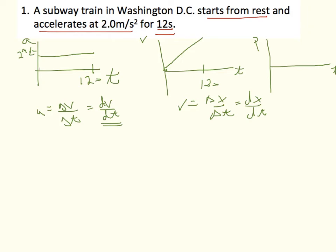Since the velocity is constantly changing and getting faster, the position graph should have a constantly changing slope that gets steeper. Drawing tangent lines starting more horizontal and becoming more vertical shows that increasing slope. Since the velocity is positive, the position is increasing — moving away from zero. Connecting those tangent lines gives a nice curve for the position graph, up to 12 seconds.